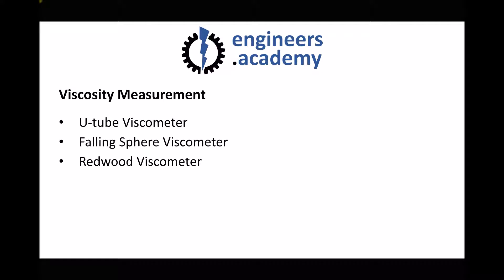To summarise, we've seen three different viscosity measurement techniques. The U-tube viscometer, where fluid flows from an upper bulb to a lower bulb through a narrow capillary. The falling sphere viscometer, where a ball of known diameter and density falls through the fluid between two index marks. And finally the Redwood viscometer, where the fluid flows from an orifice of known size at the bottom of the vessel until 50 millilitres is collected in a conical flask.